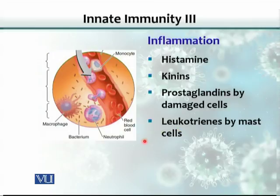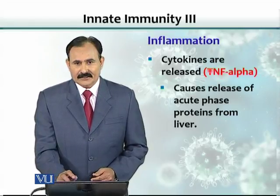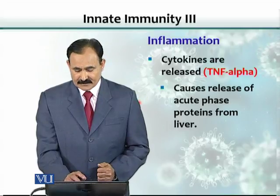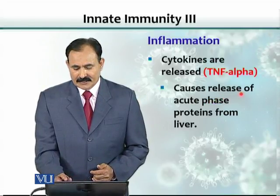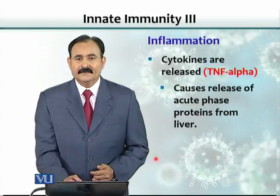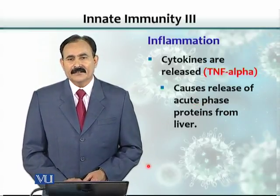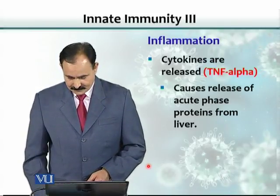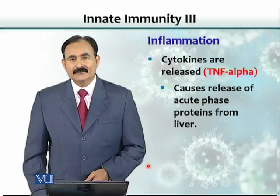Once cells of the immune system arrive, they produce various cytokines. The mast cell, already present in the connective tissue, can produce leukotrienes which attract cells to the site. TNF-alpha is a cytokine released by immune cells like macrophages, and it causes release of acute phase proteins from the liver. These acute phase proteins have antimicrobial activity against organisms — this is part of the innate immunity.